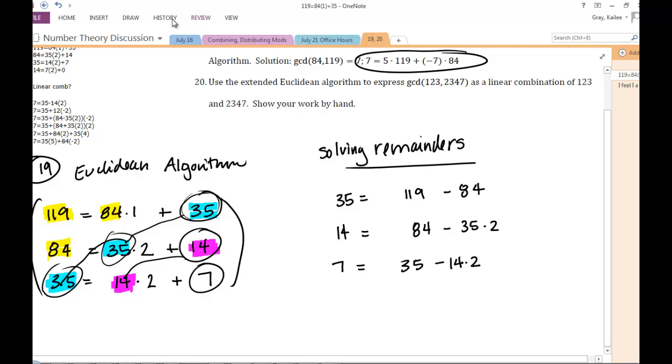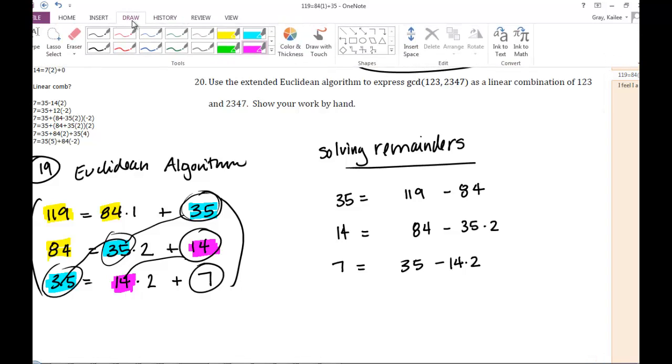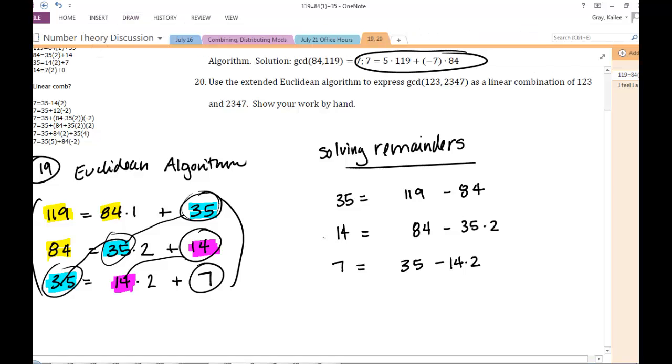So what we're going to do is just back substitution a bunch of times. We're going to start by taking 14, instead of 14 here we're going to write this representation. We're going to simplify it to get it in terms of 84s and 35s. Then we're going to substitute in for 35s, and then we're going to have all our three equations combined and compiled into one.